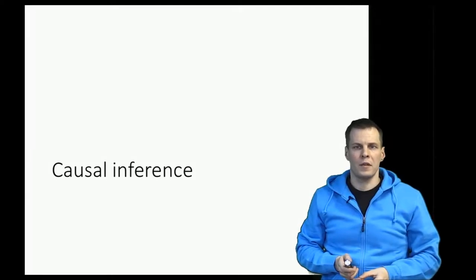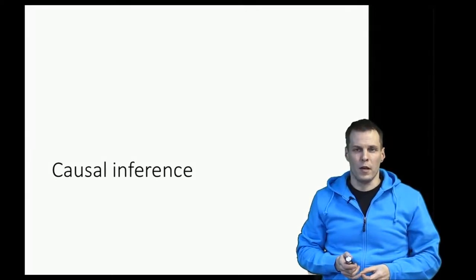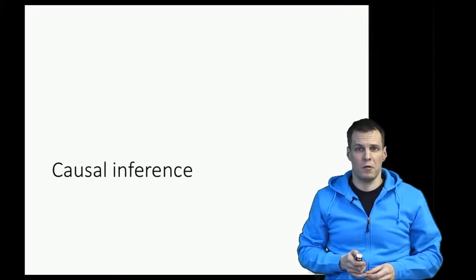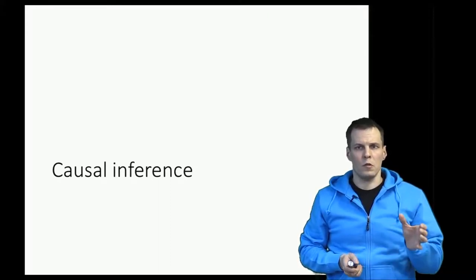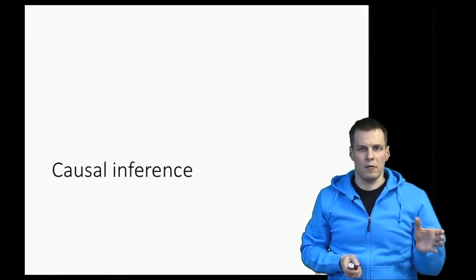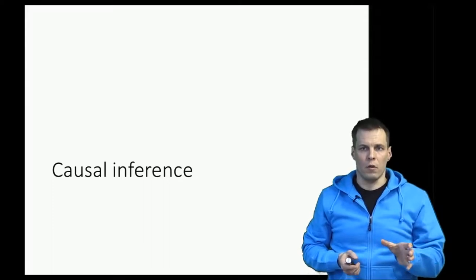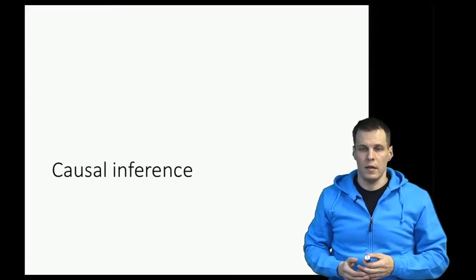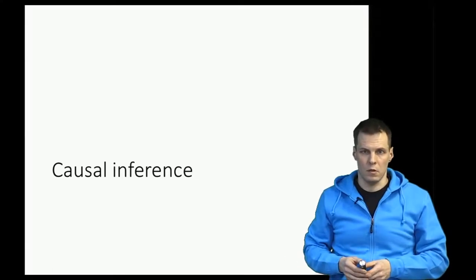After we have established that there is a statistical association in the population, the next step in research is typically causal inference. We want to say that there is actually a variable x that causes a variable y, instead of a mere statistical association.